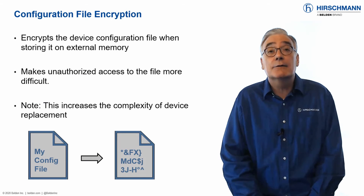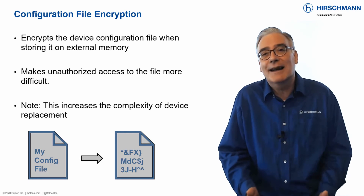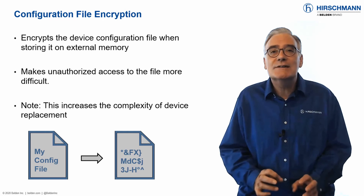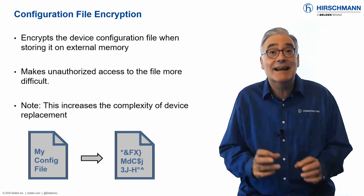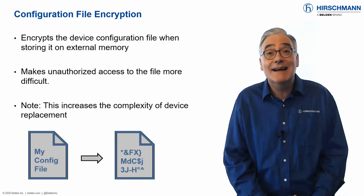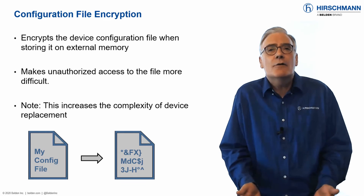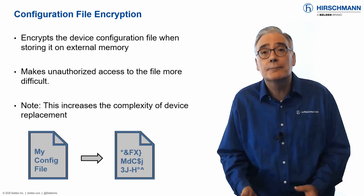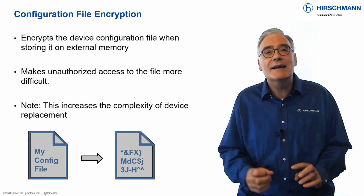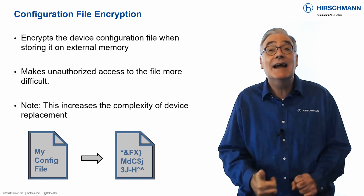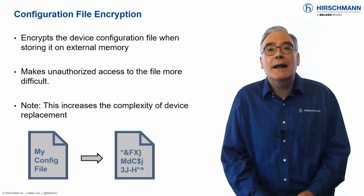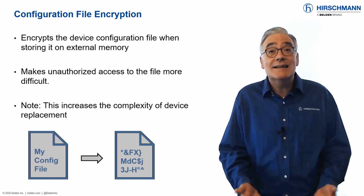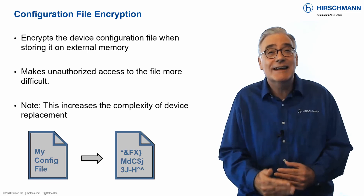You need backups of your device configuration files in case a device needs to be replaced. But what could happen if the configuration files fell into the wrong hands? Of course, sensitive information such as passwords is encrypted, but there is still a lot of potentially interesting information in these files. The obvious answer is to encrypt the configuration files, and HiOS certainly offers this option. But that leads to a classic example of where it is not possible to have both security and convenience. Traditional device replacement using removable media will not work with encrypted configuration files — a device in factory default needs to be given a password to decrypt the file.